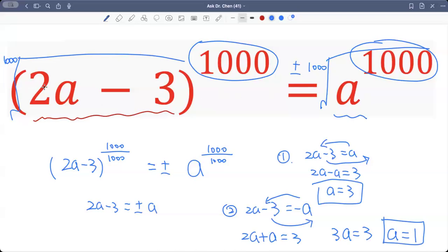Now a equals 1. 2 times 1 is 2. 2 minus 3 is negative 1. Negative 1 raised by 1000 is positive 1. And the right-hand side, which is 1 raised by 1000, is positive 1. So both good.